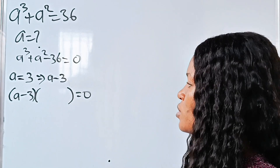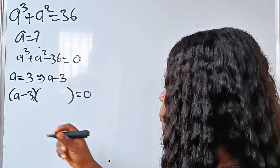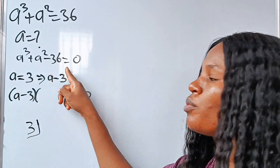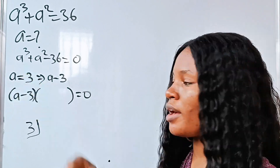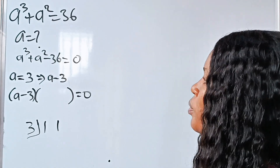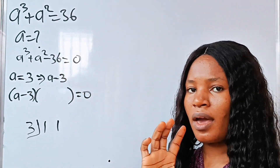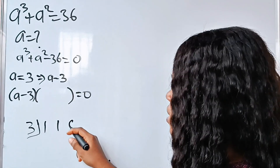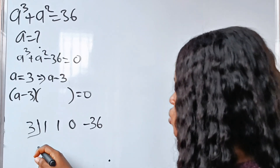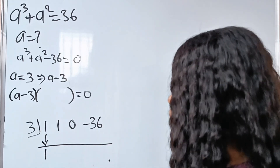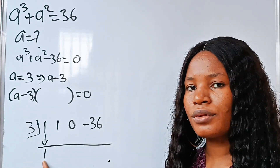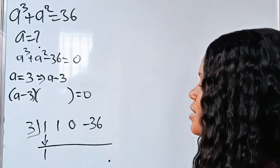In synthetic division, we already have a equal to 3, so we write our 3 and then write out the coefficients of our polynomial. The coefficient of a to the power of 3 is 1. The coefficient of a squared is 1. There is supposed to be an a term, but its coefficient is 0, so we acknowledge that. Our constant is minus 36. We bring the first coefficient, 1, down. Then 3 multiplied by 1 gives us 3, and we write that 3 here.